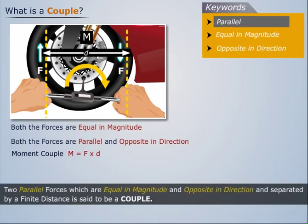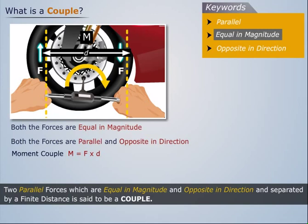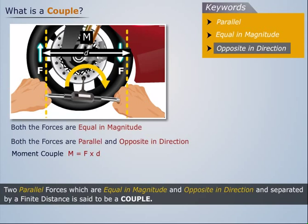Thus, two parallel forces which are equal in magnitude and opposite in direction and separated by a finite distance is said to be a couple.